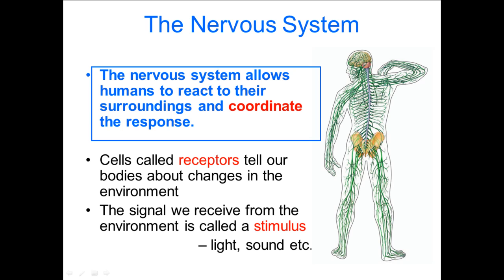Our nervous system provides or enables us to coordinate a response to a change in our environment. A nervous response is one that is very, very quick, so if there is an immediate change in the environment, it means that you can react to that quickly. That, therefore, promotes survival and hence why we have it.